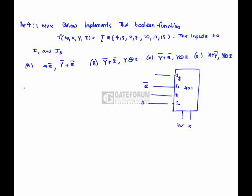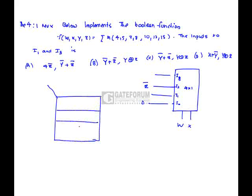The 4 to 1 mux below implements the boolean function which is shown below. The inputs to I1 and I3 is. Here, if you want to solve. See, out of the 4 variables, 2 variables are connected to the control lines. So, what we will do is by using K-map, we can easily find this one.